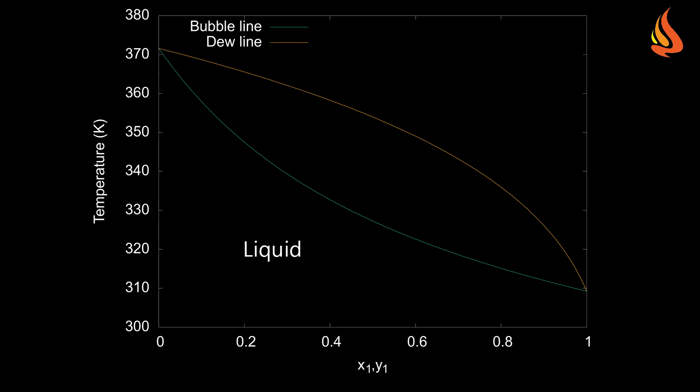Below the bubble point line, the system is 100% liquid. Above the dew line, it's totally vapor. Between the bubble and dew point lines, there is vapor-liquid equilibrium. At this moment, you might ask yourself, is it possible to have solid phase formation of n-pentane or n-heptane or both? It certainly is, but this happens at temperatures well below those that are considered in this plot.